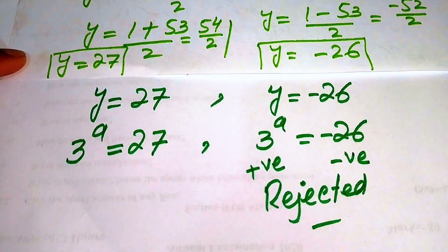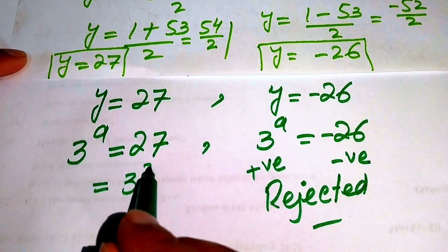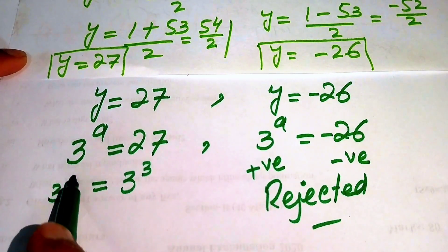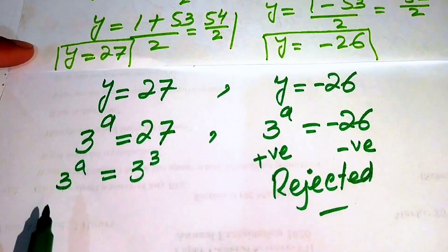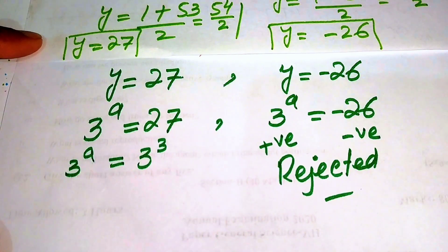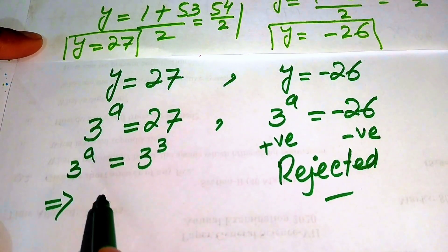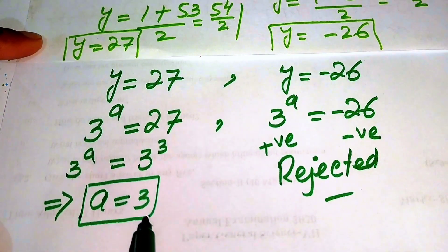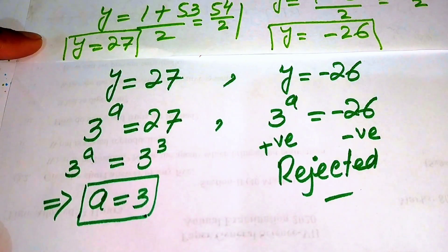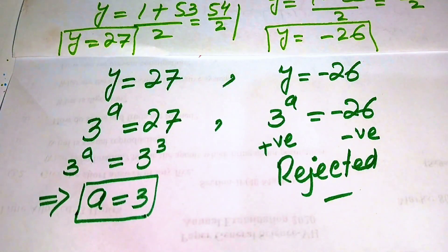We are left with only one case: 3 to the power of a equals 27. We write 27 as 3 cubed. Comparing both sides, the bases are the same, so we equate the exponents and get the value of a equals to 3. This is the final answer. Thank you so much for watching this video — please subscribe to my channel for more exciting videos.